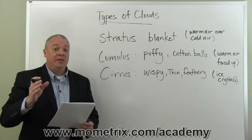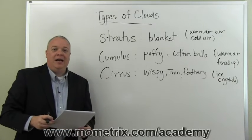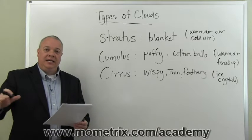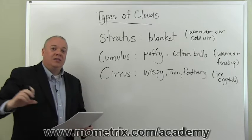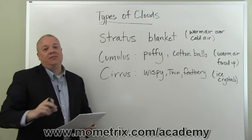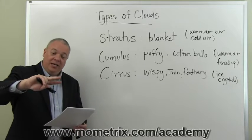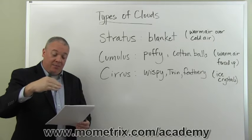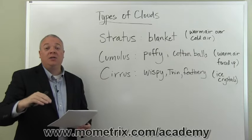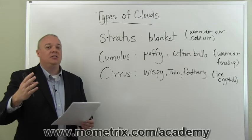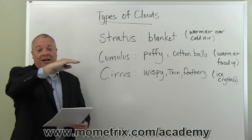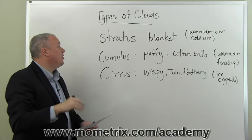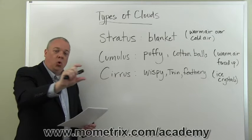We'll begin by looking at stratus clouds. For stratus clouds, think of a blanket. What you have is a layer of very cold air, and then a layer of warm air that rides over the top of that cold air. At the boundary between the cold air below and the warm air above, as that warm air begins to cool by coming into contact with the cold air, if it goes below the dew point it condenses out and produces a very uniform cloud bank or layer at that boundary — it looks like a blanket. Stratus clouds: warm air riding over the top of cold air.